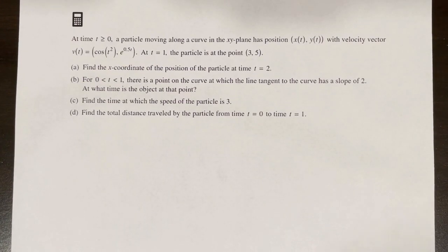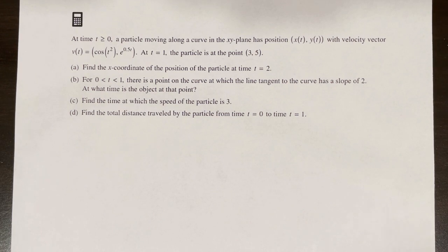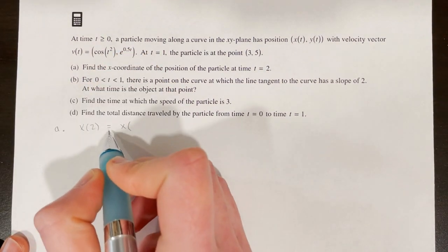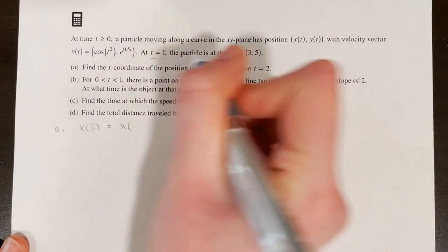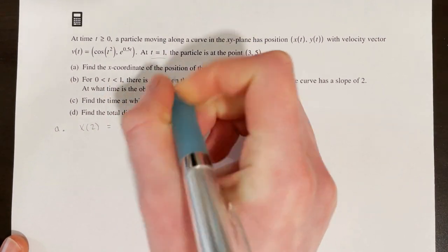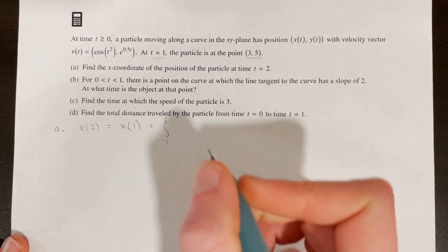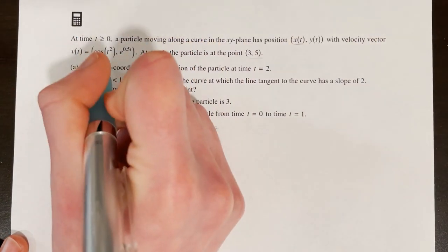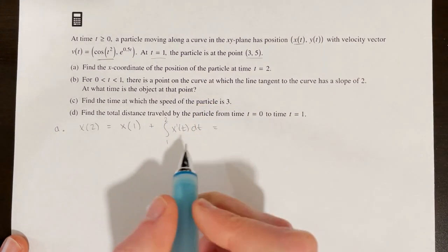Let's try another calculator free response question. At time t ≥ 0, a particle moving in the xy plane has velocity vector v of t equals (cos(t²), e^(0.5t)). At t = 1, the particle is at the point (3, 5). Part a asks for the x coordinate of the particle's position at time t = 2. We use x of 2 equals x of 1 plus the integral from 1 to 2 of x prime of t dt, where x prime of t is cos(t²).